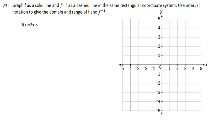We're looking at question number 23, and it's asking us to graph f as a solid line and the inverse of f as a dashed line in the same rectangular coordinate system. And to use interval notation, give both the domain and range of f and the inverse of f function.